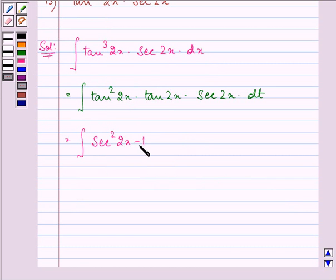So secant squared 2x minus 1 will get multiplied by tan 2x and also secant 2x into dx.